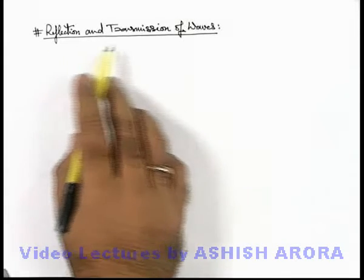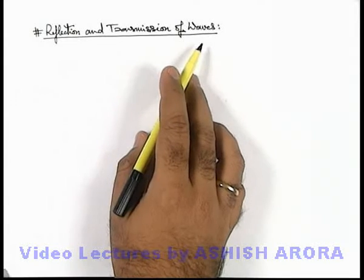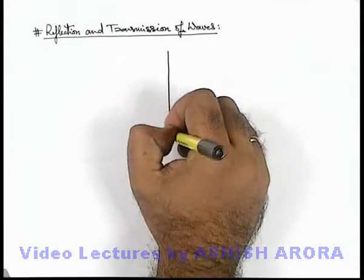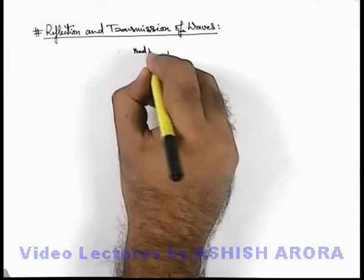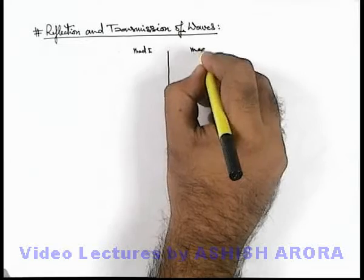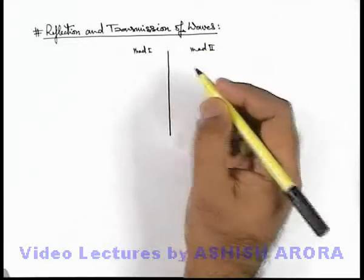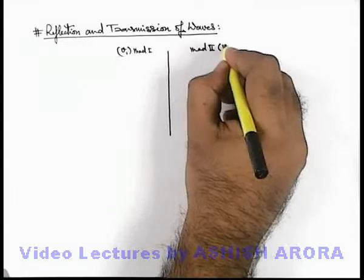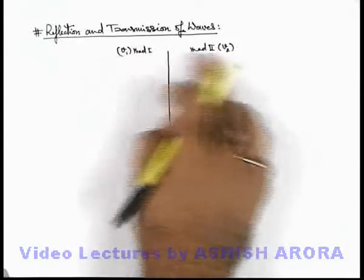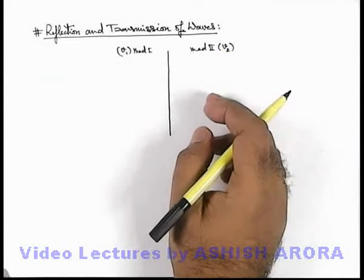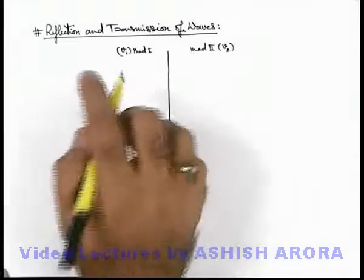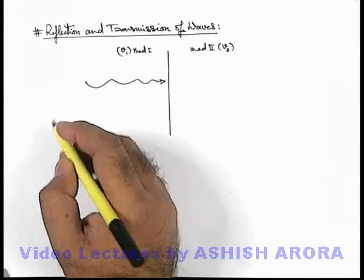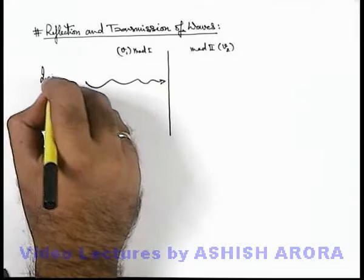Let's study reflection and transmission of waves. If there is a boundary of two media, medium 1 and medium 2, where the wave can propagate with speed v1 and speed v2 — and corresponding to the speed, wave number can also be defined — say from medium 1 a wave is incident onto the boundary of the two media, which is called the incident wave.